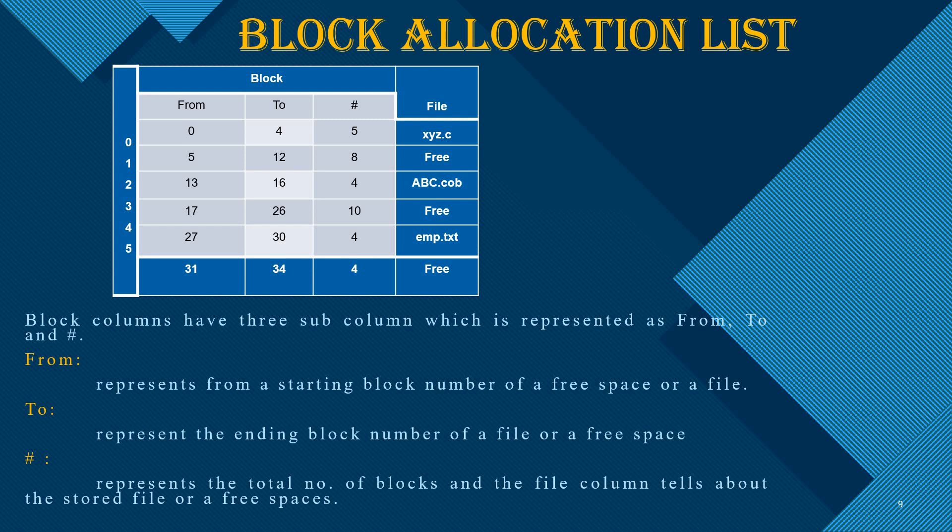Among first fit, best fit, and worst fit, the best fit is the most advantageous one. In the block allocation list, we are assigned blocks with a starting address, ending address of the partitions, and the size of the block, along with whether the file is allocated or the particular part is free.